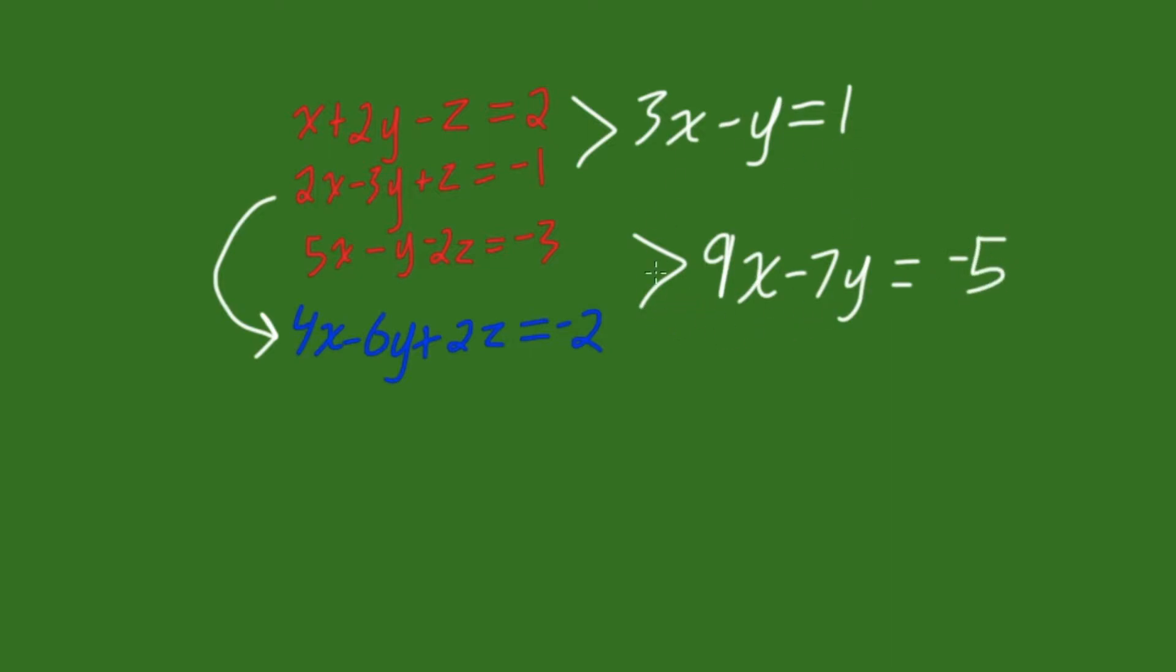Now, we have two equations with two variables. You should be a little bit more familiar at this point. So, if we now eliminate one of these variables from each of these equations, we will be left with just one variable which we can solve for.